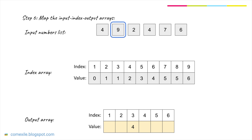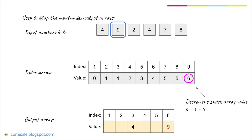Let's move on to the next element which is 9. Find index 9 in the index array — the value is 6. Find index 6 in the output array and fill in the value. Again, we need to decrement the index array value. The value was 6 and after decrementing the new value should be 5.